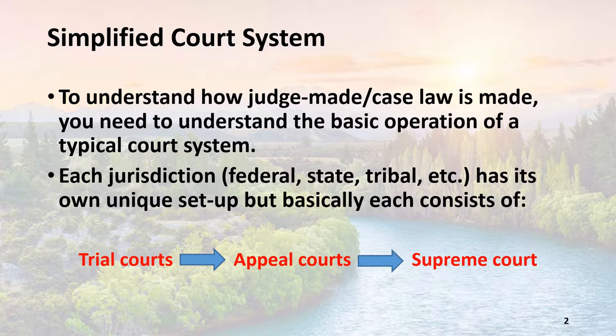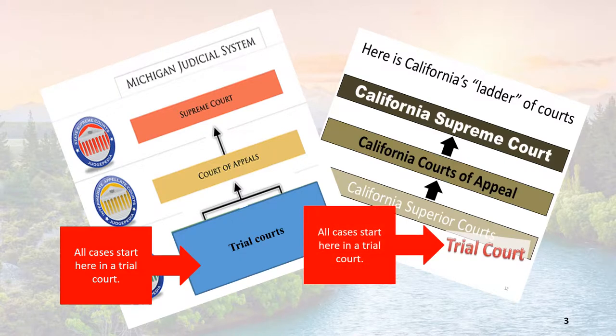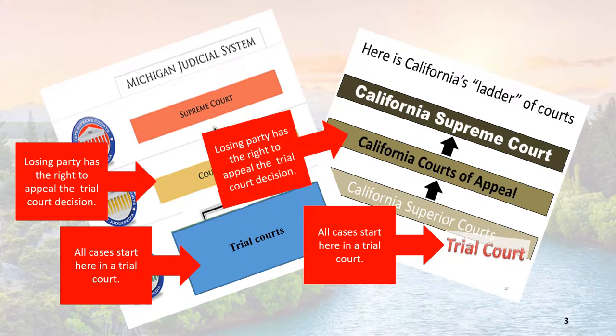Each jurisdiction — federal, state, tribal, etc. — has its own unique setup, but basically each consists of trial courts, appeal courts, and a Supreme Court. All cases start in a trial court. The losing party has the right to appeal the trial court decision. Supreme courts decide which cases to resolve.